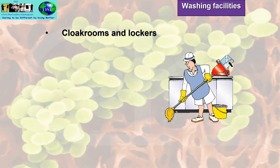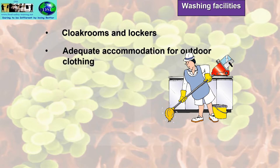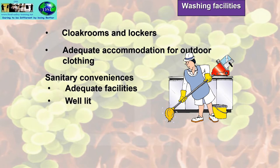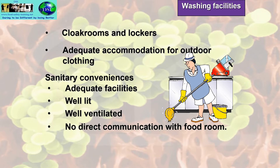Washing facilities should also include cloakrooms and lockers, adequate accommodation for outdoor clothing, and sanitary conveniences. These must be adequate, well-lit, well-ventilated, and have no direct communication with the food room.